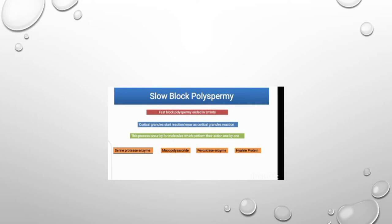As shown, the fast block ends in about two minutes, after which cortical granule action starts. Then actions occur one by one: serine proteases, mucopolysaccharides, peroxidases, and hyaline proteins — all playing important roles.